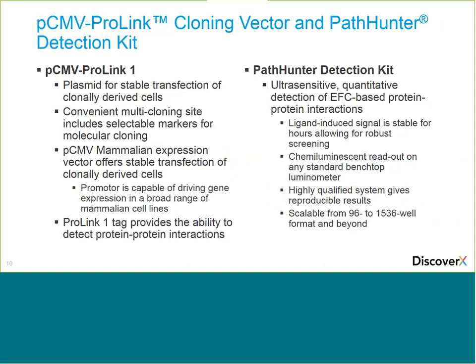The enzyme donor plasmid uses a cytomegalovirus promoter capable of driving gene expression in a broad range of mammalian cell lines, including the U2OS cells used here. It's called ProLink 1 — a low-affinity tag suited for most standard protein-protein interactions; higher affinity versions are available for weaker interactions. The PathHunter detection kit provides the substrate for the final assay, giving a stable chemiluminescent signal for hours, suitable for high-throughput screening and miniaturizable down to 384 or 1536-well formats. The protocol is dye-free, non-radioactive, no wash steps — just add, mix, and read.